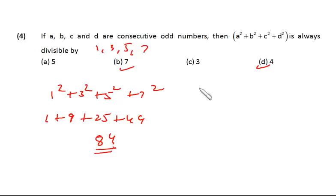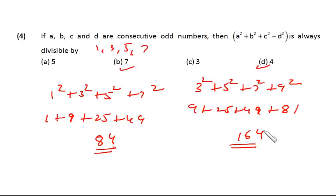Now 84 is divisible by 7 and 4 both as well, but we have to eliminate one option. Now let's take 3, 5, 7 and 9. So it's 3² + 5² + 7² + 9², so it's 9 + 25 + 49 + 81. What I'll be getting here is 9 + 5 is 14, + 9 is 23, + 1 is 24, that is 164. Now 164 is divisible by 4 but whether it is divisible by 7, let's see: 7 × 2 is 14, 24, so it's not divisible by 7. So we have eliminated 7 and our final answer is 4 only.